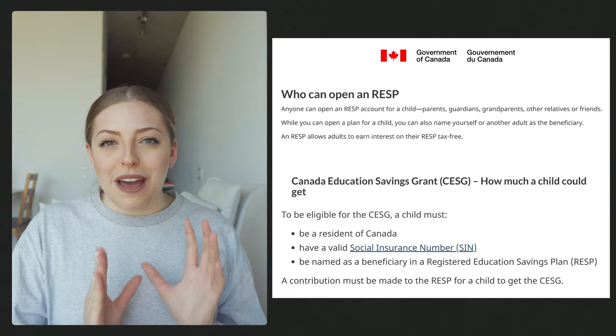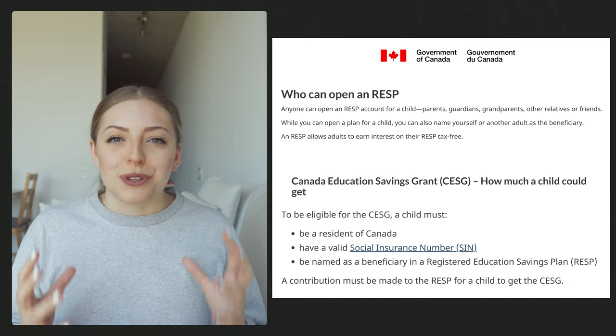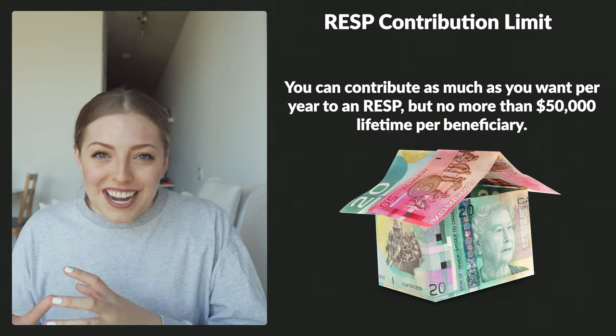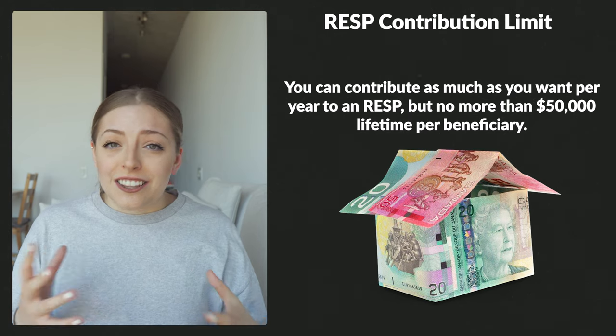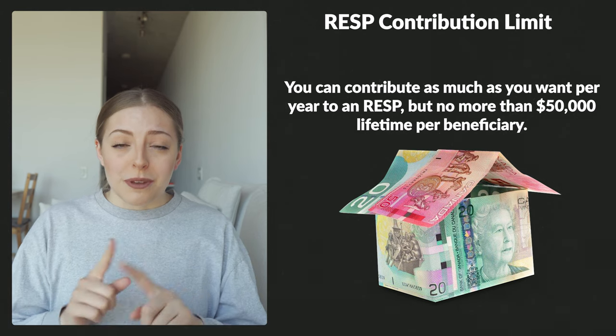Now that we understand what's great about the RESP — from tax-free gains to government matching — there are some rules to follow. An RESP account needs to be opened on behalf of a kid who's already been born and who has a Canadian SIN. Just like the TFSA, there's a contribution limit. What's unique about the RESP's contribution limit is that it's not a set or changing annual limit, nor is it based on the person's age. There's a lifetime maximum of $50,000 per kid — not per RESP. One kid could technically have multiple RESPs, but the total limit of $50,000 applies across all accounts.